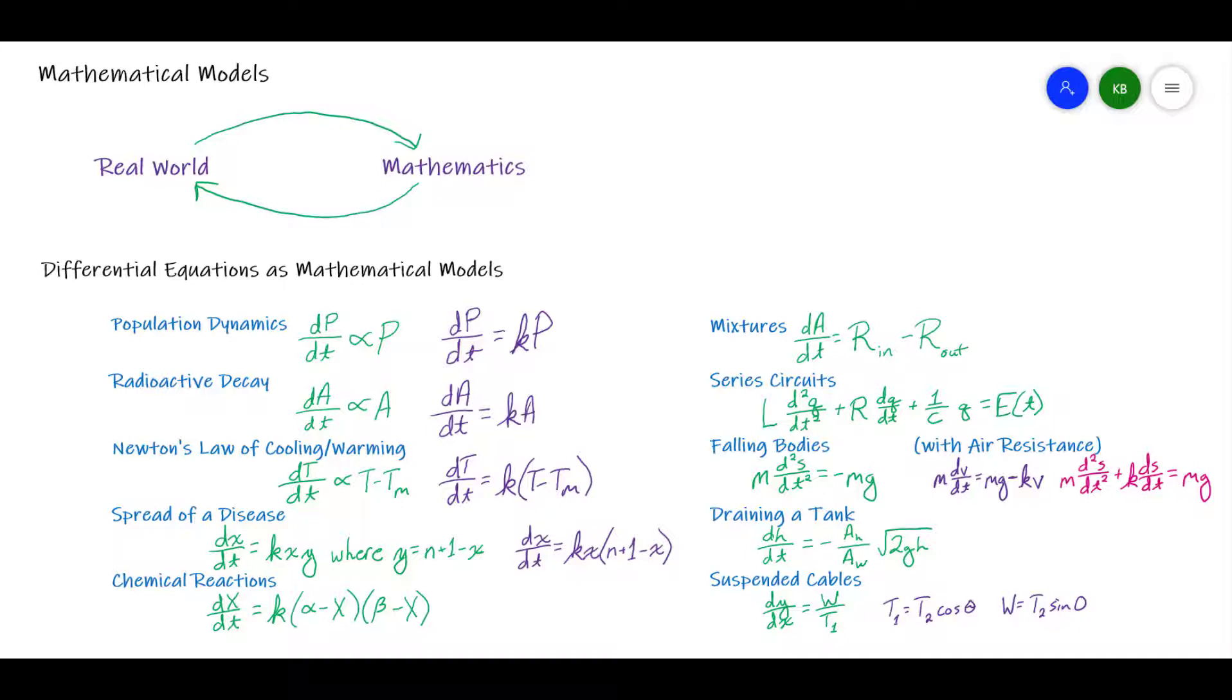So some really common differential equations as mathematical models: we use the equation the derivative of p with respect to t equals k times p. When we're talking about the population, p is the population, t is time.